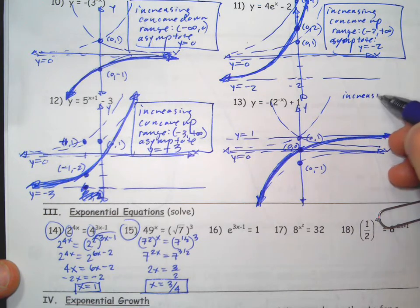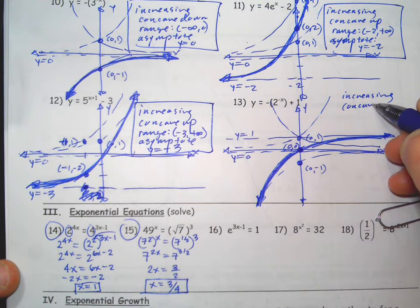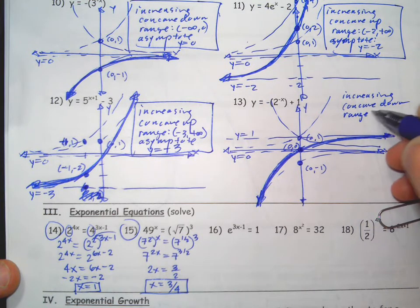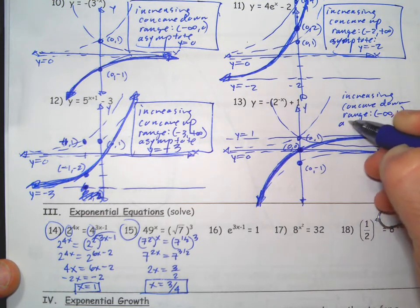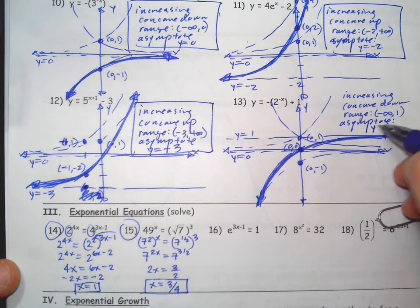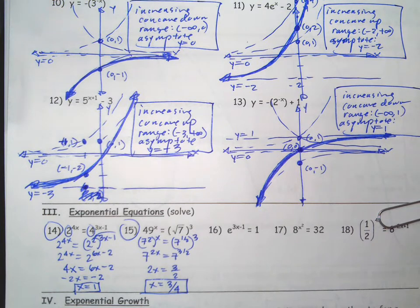Keep track of that original y-intercept, is now zero zero. So it is increasing, concave down. Range is negative infinity to one. Asymptote is y equals one. Here we go, you guys should be pretty good at graphing now hopefully.